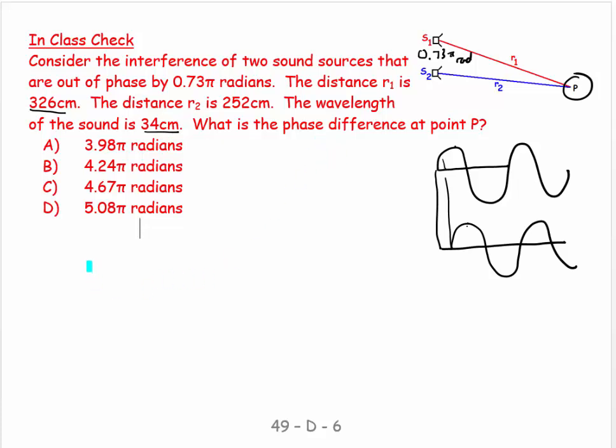The phase difference is equal to the difference between the two paths, r₁ minus r₂, divided by the wavelength. That gets me a ratio, and each wavelength has 2π radians in it, so now I'm in radians. Then I add the phase angle for my phase difference at my source.